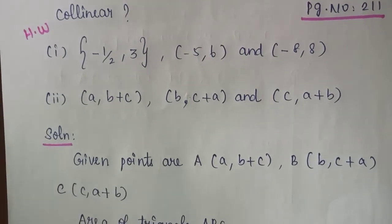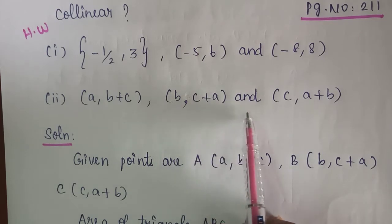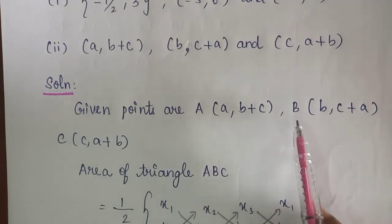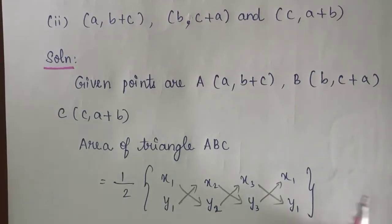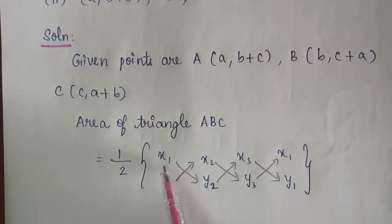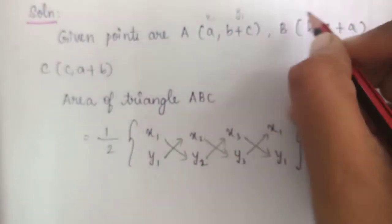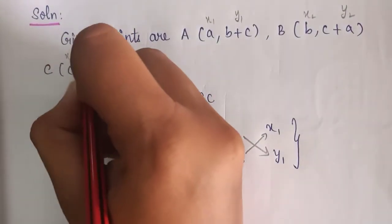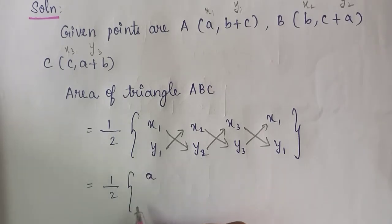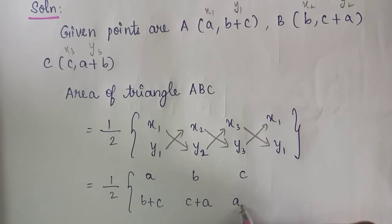Second subdivision: points are A(a, b+c), B(b, c+a), and C(c, a+b). Area of triangle ABC = (1/2) into x1, y1, x2, y2, x3, y3 and x1, y1. Substituting: x1 = a, y1 = b+c; x2 = b, y2 = c+a; x3 = c, y3 = a+b. Again a, b+c.